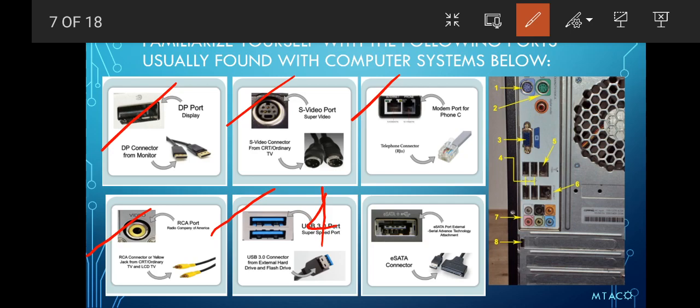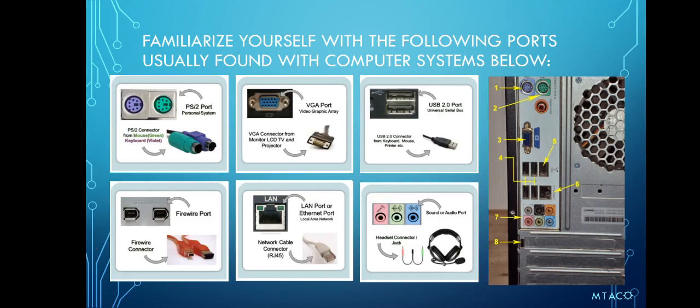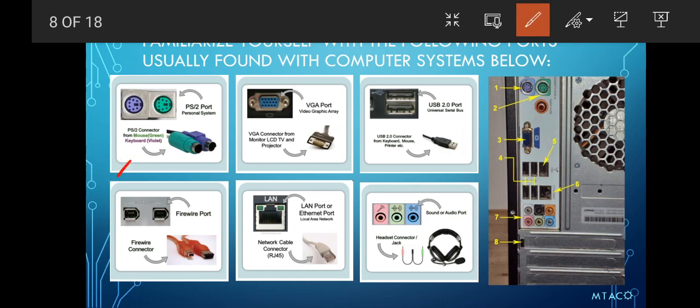Next is your eSATA connector — this is the external Serial Advanced Technology Attachment. After that is your PS/2 port, which can be used for your mouse and keyboard. The green is for the mouse and the violet or purple is for the keyboard.